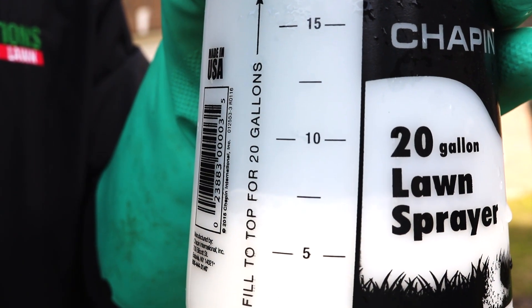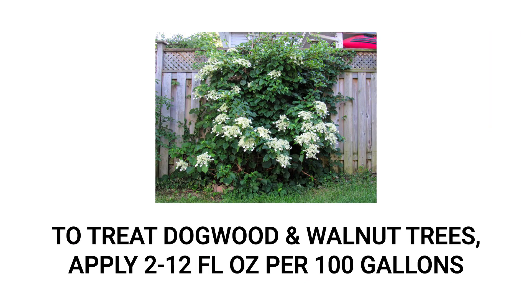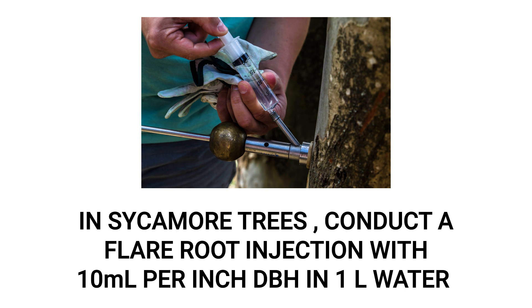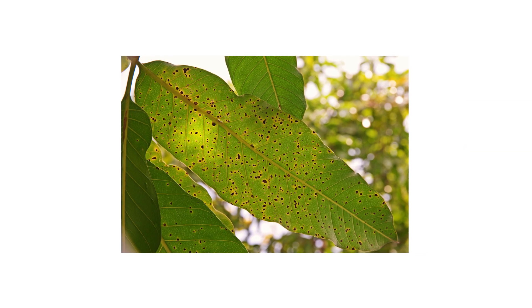To treat anthracnose in dogwood or ornamental walnut trees, conduct a full coverage application of the tree's leaves with 2 to 12 fluid ounces of Patch Pro in 100 gallons of water, or a smaller equivalent proportion. To treat anthracnose in sycamore trees, conduct a flare root injection at a rate of 10 milliliters of Patch Pro in up to 1 liter of water per inch in diameter at breast height, or DBH.